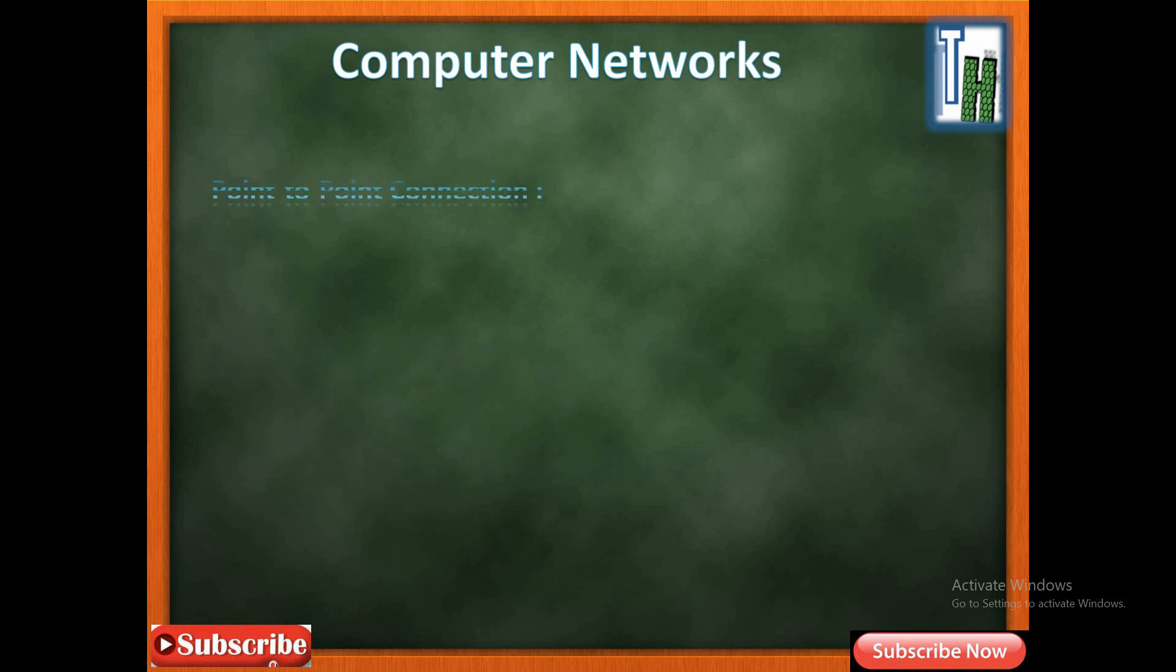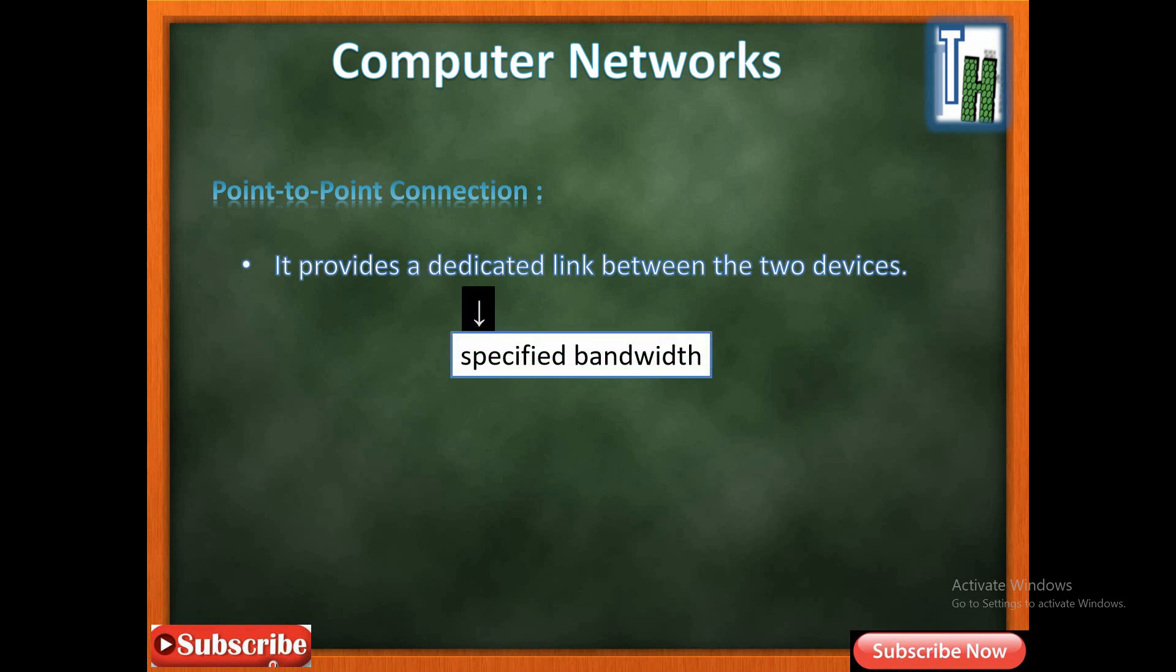So let's move to the point-to-point connection. In this network there are only two devices, and the link between them is a dedicated link, which means that for that link there is a certain amount of bandwidth fixed. And also the important point is the entire capacity of the link is shared by both devices.